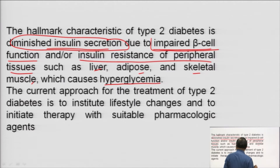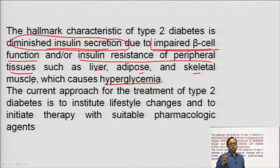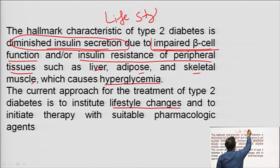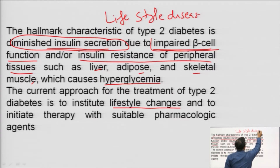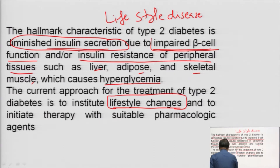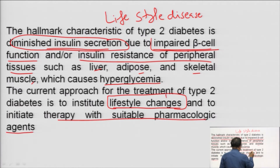The current approach for the treatment of type 2 diabetes is to institute lifestyle change. As I mentioned in my first lecture, diabetes is more or less a lifestyle disease. So if we change our lifestyle, we can improve the condition. The first recommendation is lifestyle change, followed by treatment with suitable pharmacological agents.